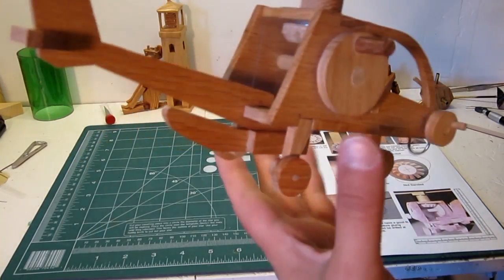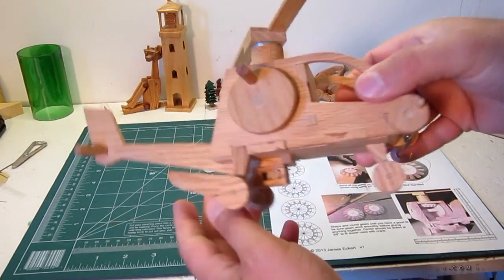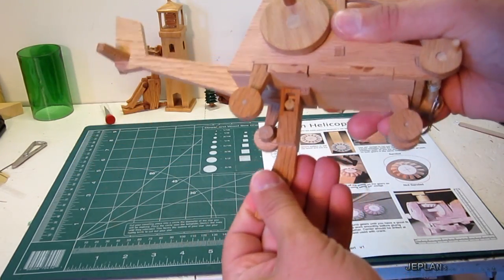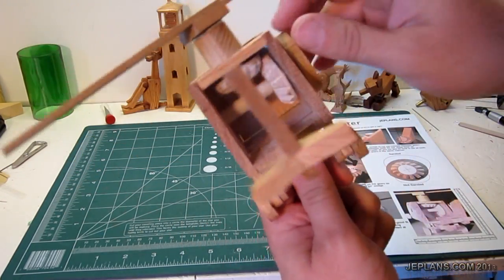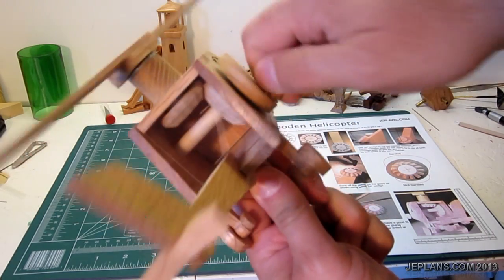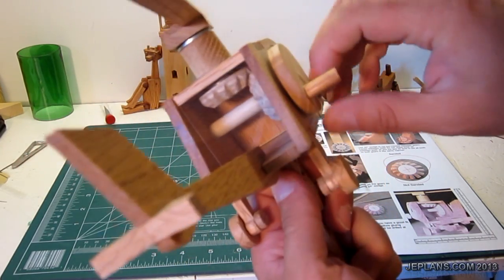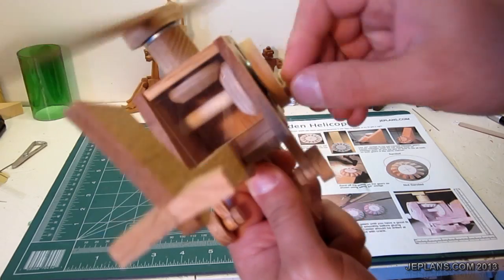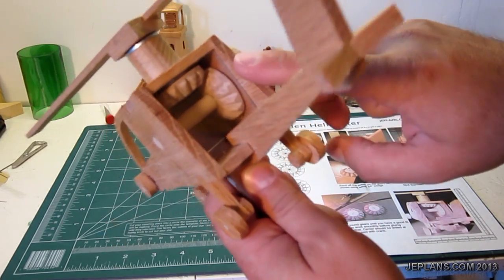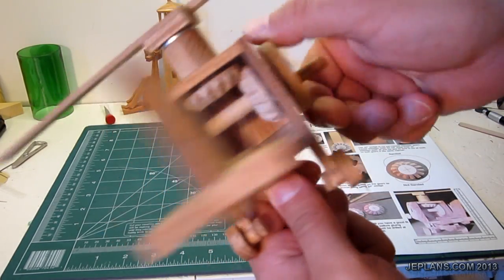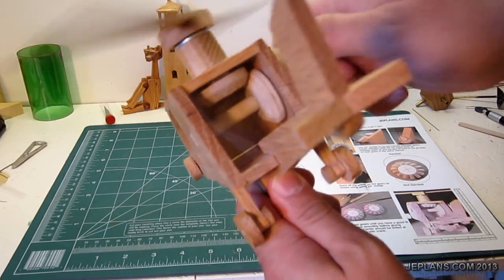I recently uploaded plans for this helicopter here, and it's fairly basic, except for one detail. It has beveled gears in the back. So I figured I'd make a little video on how to make these beveled gears, because that's really the hardest part of the helicopter.